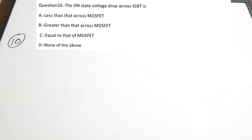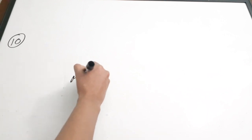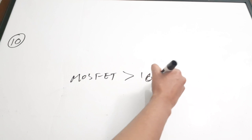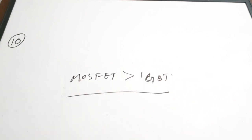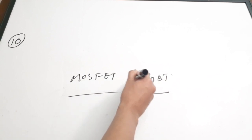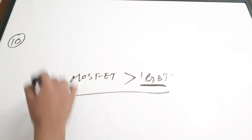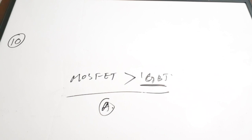Tenth question: the on-state voltage drop across IGBT is dash compared to MOSFET. Options: A) less than that across MOSFET, B) greater than, C) equal to, D) none. In the on-state condition, the MOSFET has a greater voltage drop than the IGBT. So the IGBT on-state voltage drop is less than that of the MOSFET. Correct answer is option A.